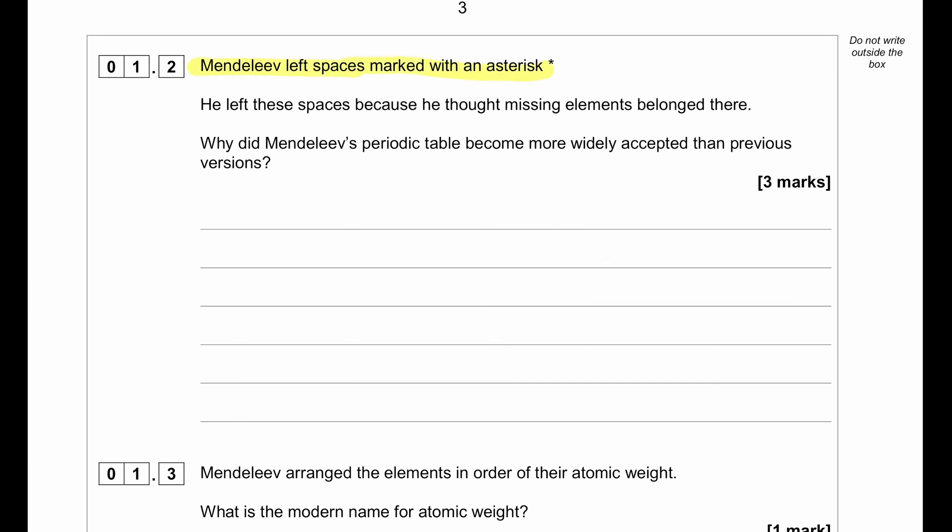Mendeleev left spaces marked with an asterisk. He left these spaces because he thought missing elements belong there. Why did Mendeleev's periodic table become more widely accepted than previous versions? Mendeleev had predicted properties of missing elements. When the elements were discovered, those properties matched the prediction of Mendeleev and that's why it was placed in that particular place.